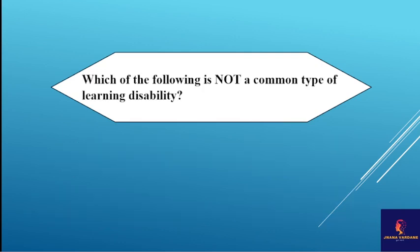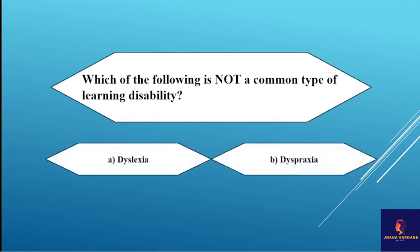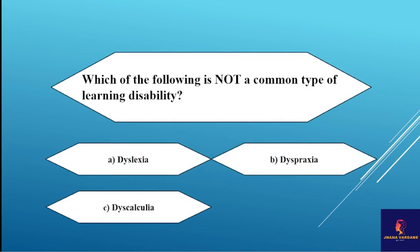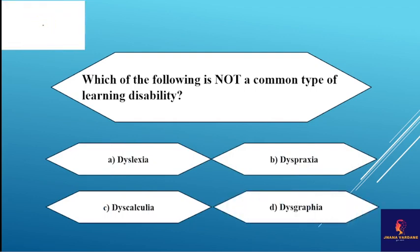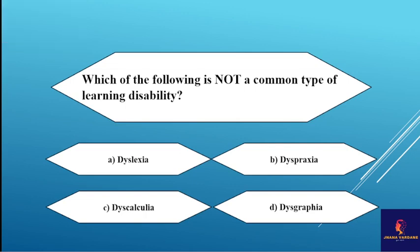Next question: which of the following is not a common type of learning disability? Options: dyslexia, dyspraxia, dyscalculia, and dysgraphia. Dyslexia relates to reading ability, dyscalculia to mathematical skills, and graphia to writing skills. The answer given is dyslexia as not a common type of learning disability.